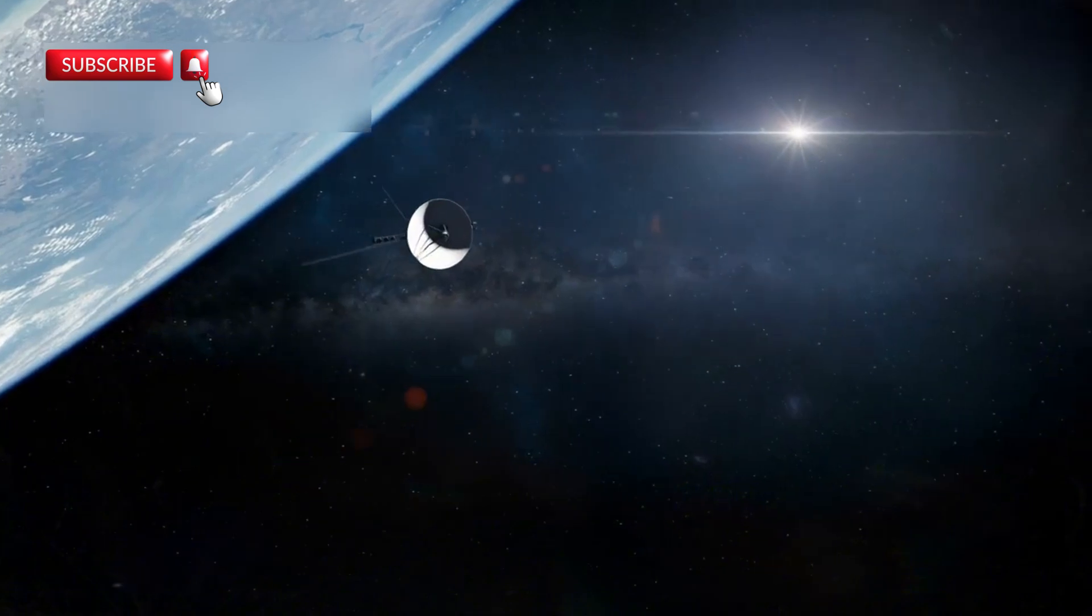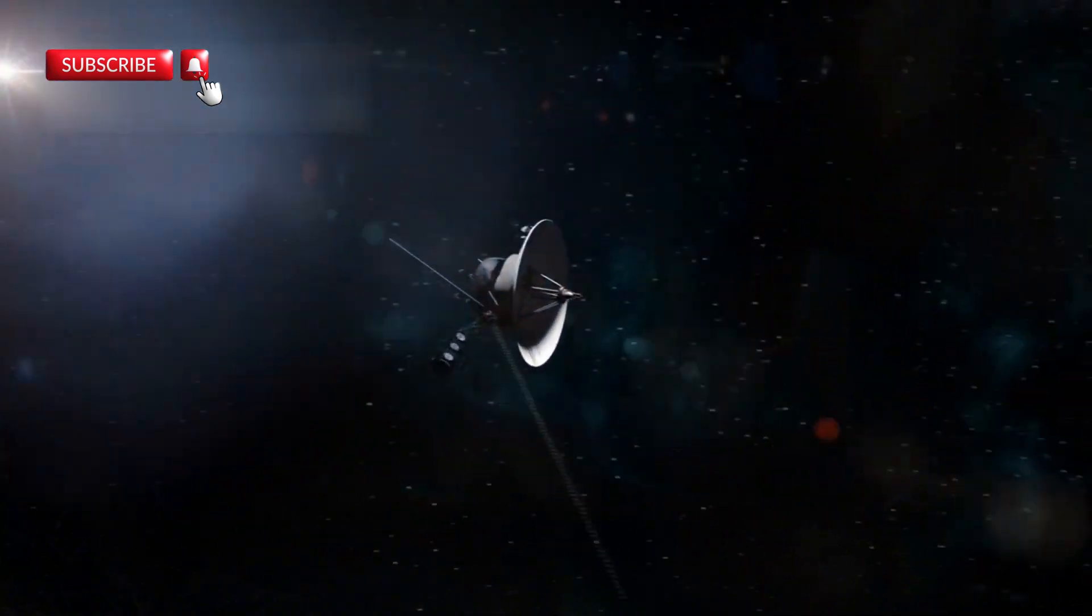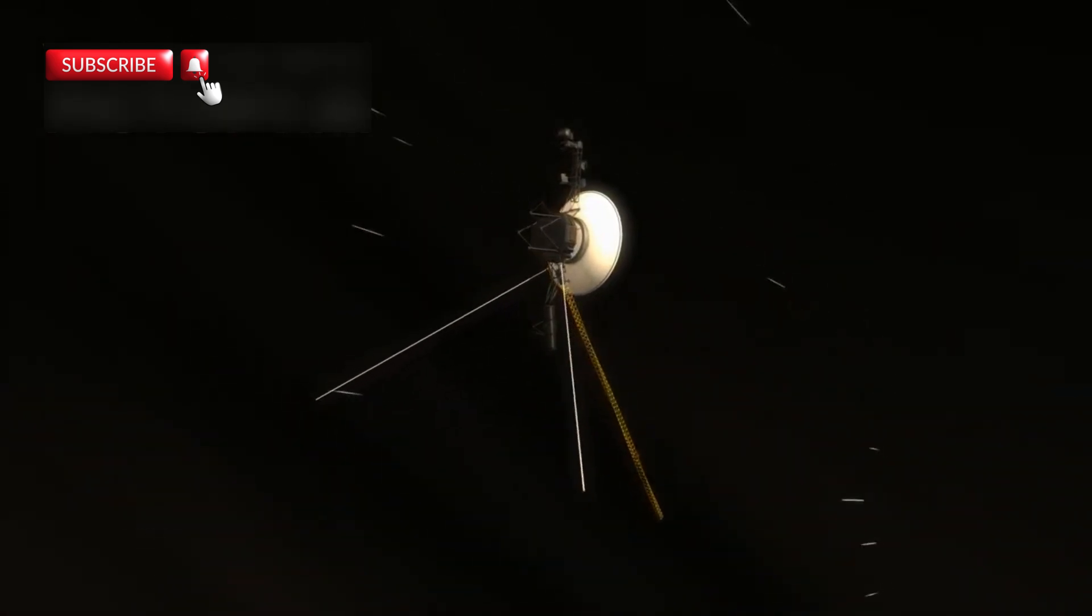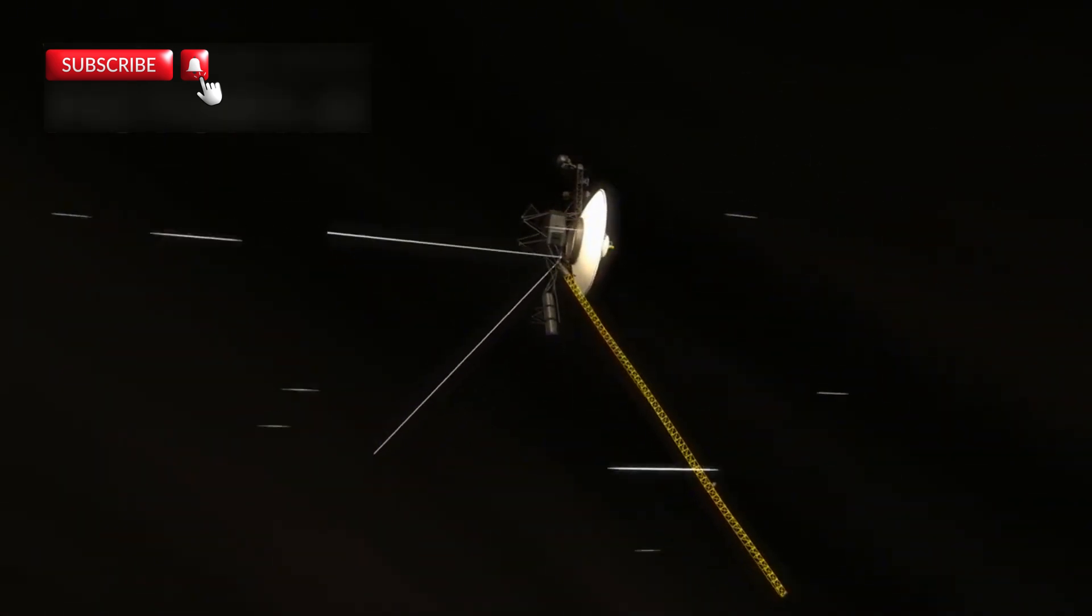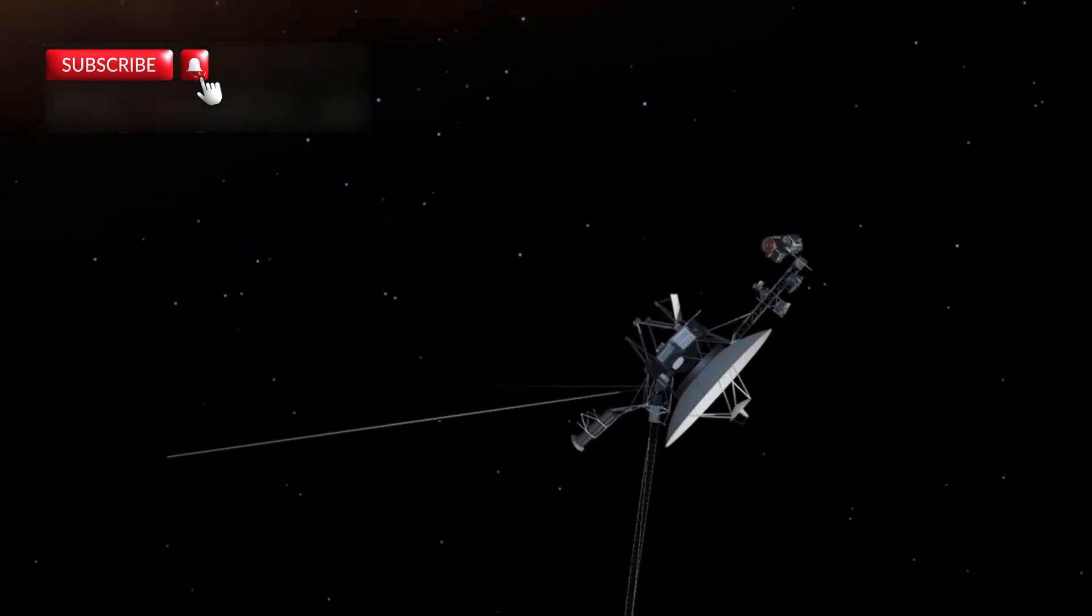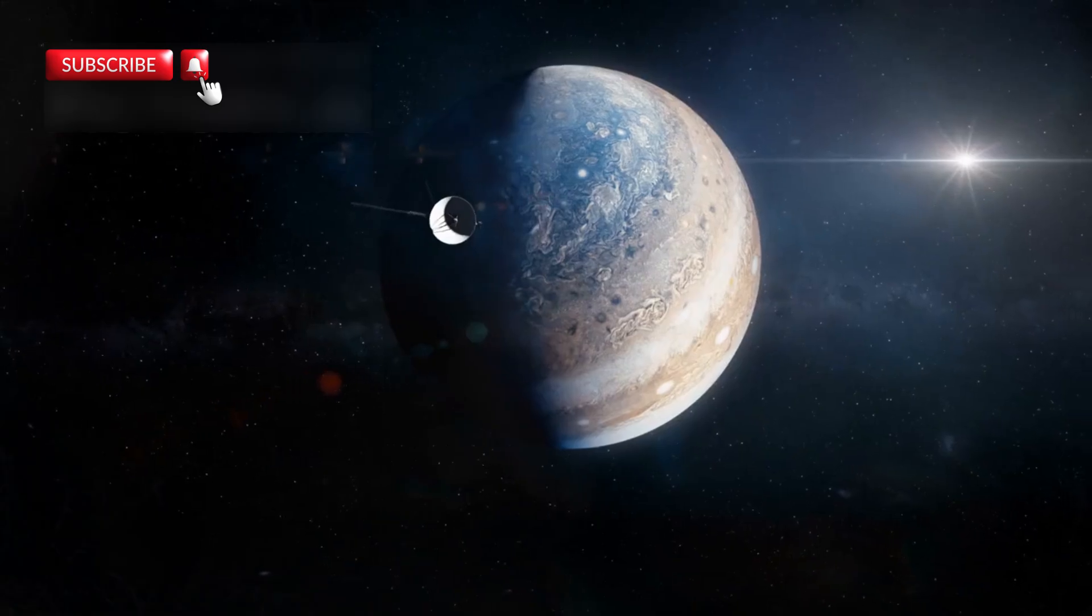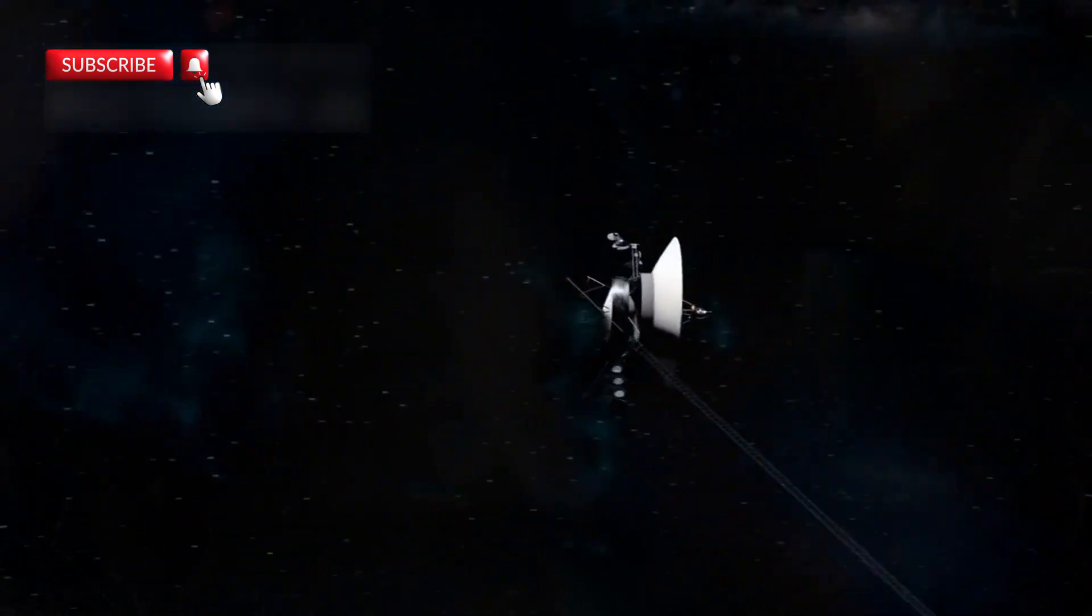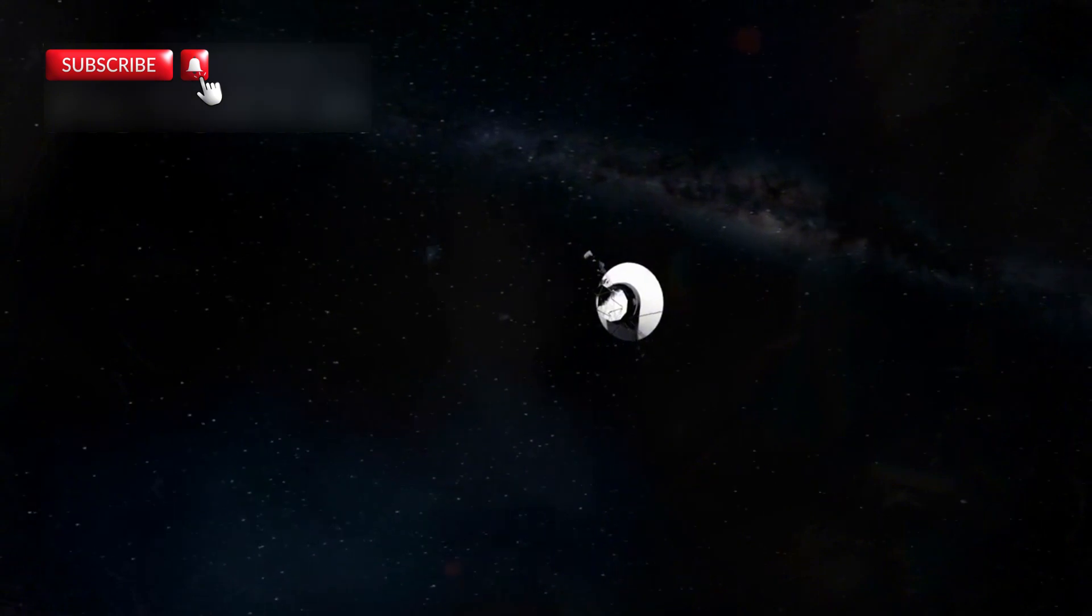But Voyager 1's mission didn't end with a photograph. It continued on its path, exploring areas of space that no human-made object had ever reached. It entered the interstellar medium, a region far beyond the influence of our Sun. This makes Voyager 1 the first spacecraft in history to leave the heliosphere, the protective bubble created by the Sun's solar wind.